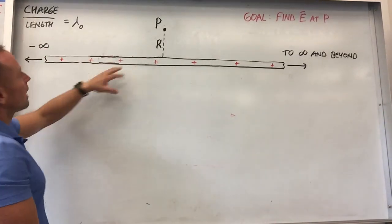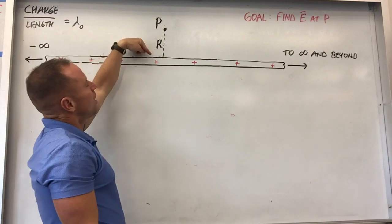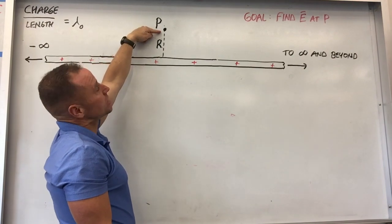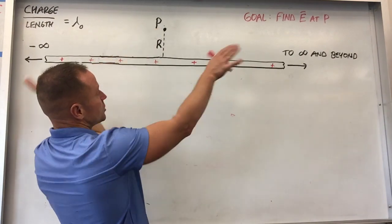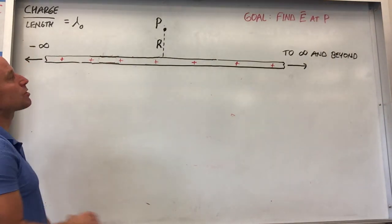All right, now what we're going to do is get the electric field that's created by a long, positively charged stick. We're going to get the electric field at a particular distance away from the charged rod. We're going to do it an easier way this time, using what's called Gauss's law.